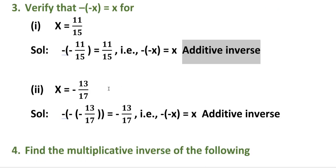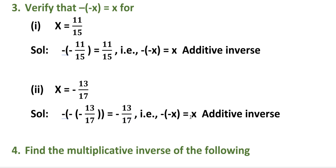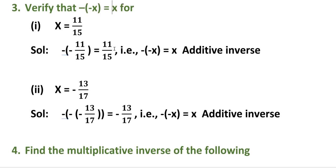Second one: x is equal to minus 13 by 17. Minus of minus of minus 13 by 17 — minus into minus equals plus, plus into minus equals minus. So minus 13 by 17 is the result. Therefore minus of minus x is equal to x. Two solutions verified.